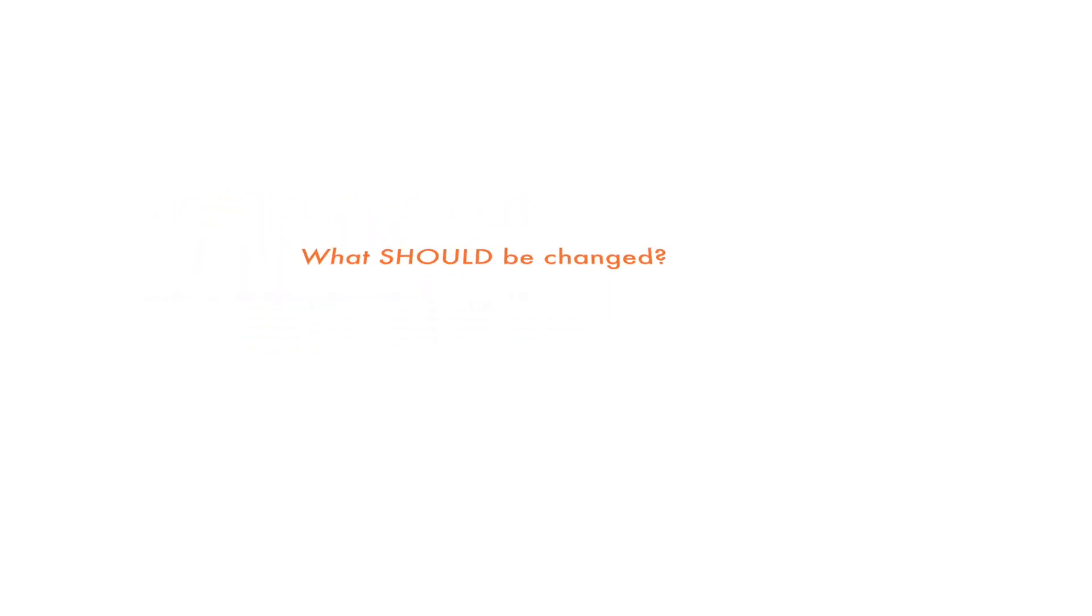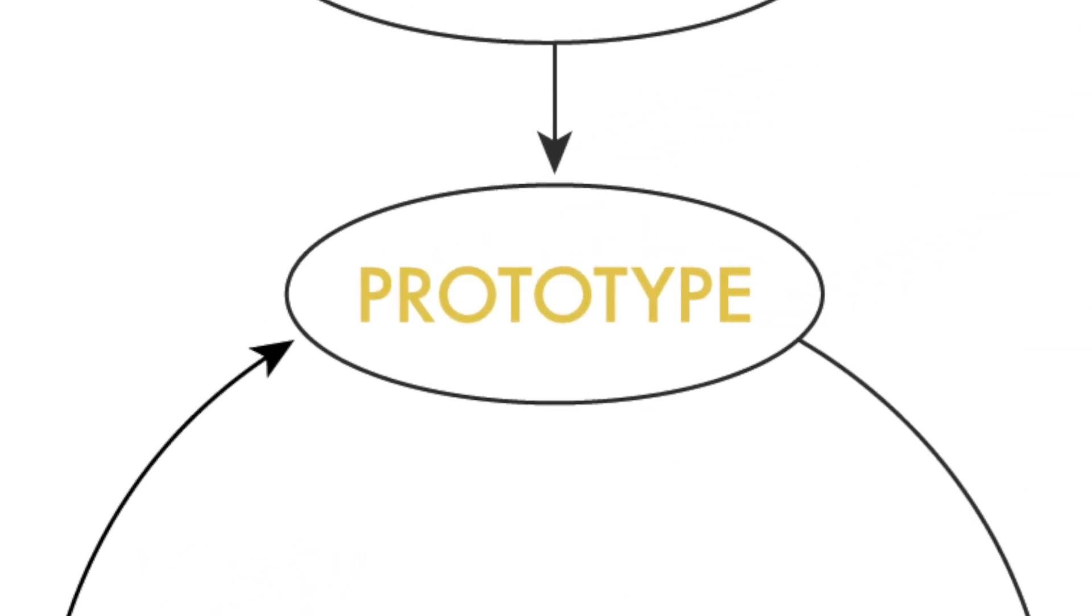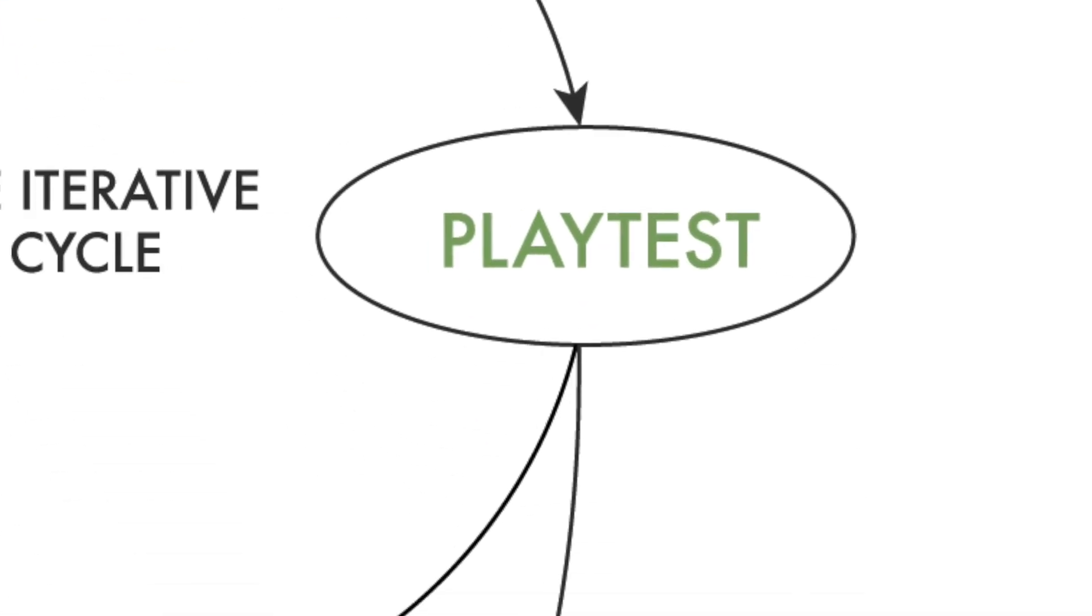What can be changed? What should be changed? What sort of changes will you make and test? This brings us back to the prototype stage where you build another prototype that improves upon your previous prototypes based on the feedback you've received in playtesting. So you take that prototype and you playtest your new prototype and then iterate again.